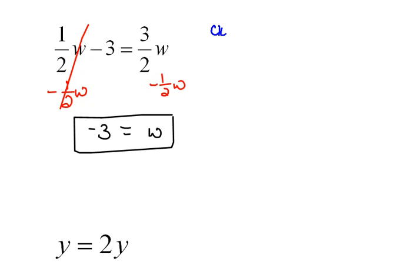Now again, let's check it just to make sure. 1 half times, instead of w, negative 3, minus 3 is supposed to equal 3 halves times, instead of w, negative 3. So 1 half times negative 3 would be negative 3 halves, minus 3, equals 3 halves times negative 3 would be negative 9 halves.